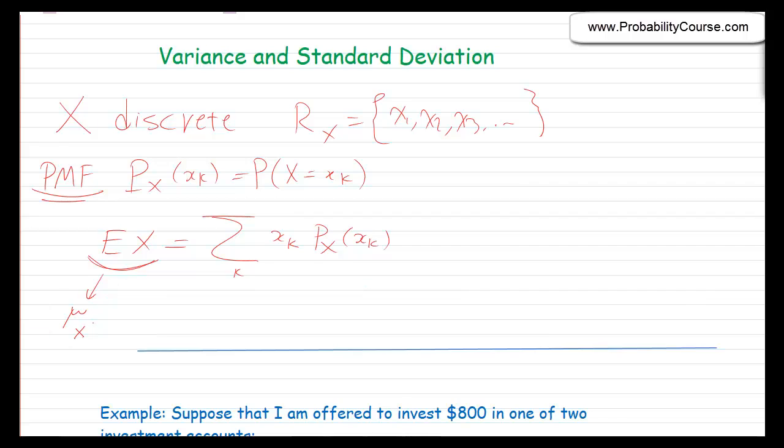The expected value is a useful statistic — in some sense it summarizes the whole PMF in one single number, mu. However, it is not always enough. We need more information about the probability mass function in many situations. Let's look at an example.